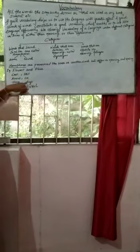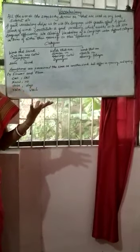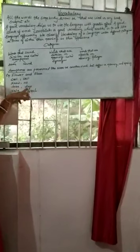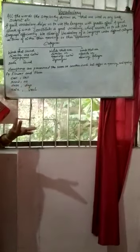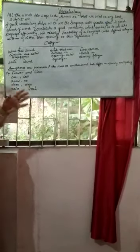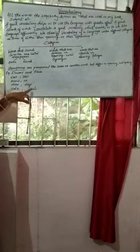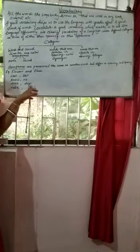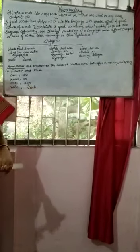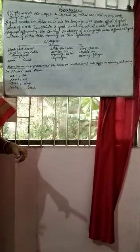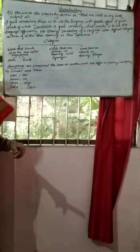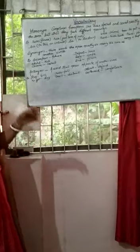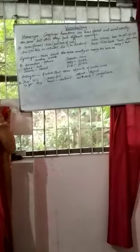Daze — D-A-Z-E — means surprise: 'When I saw the accident, I was in a daze.' And days — D-A-Y-S — means 'there are 7 days in a week.' Similarly, vale — V-A-L-E — means valley. And veil — V-E-I-L — means a covering, like the veil a bride uses to cover her head.